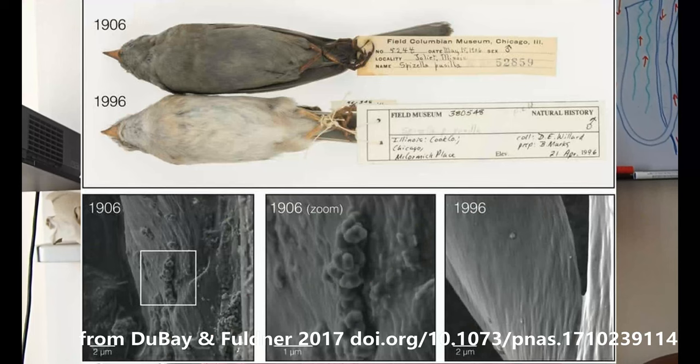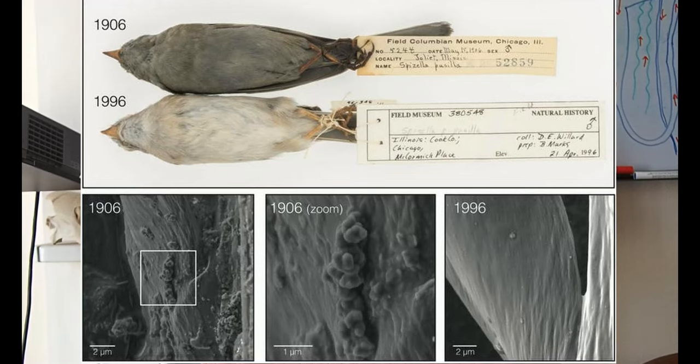Museum specimens have also proved critical in identifying the chytrid fungus that causes sudden amphibian declines around the world. Soot on bird feathers in museums showed that carbon pollution was significant back in the late 1880s, much earlier than had been thought previously.